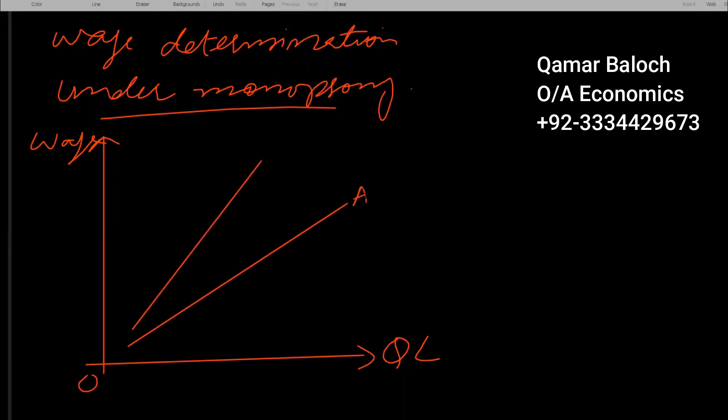This is average cost of labor, which is also known as supply of labor. This is marginal cost of labor. And this is marginal revenue product of labor, which is also known as demand for labor. MRP, marginal revenue product of labor, or it is known as demand for labor.